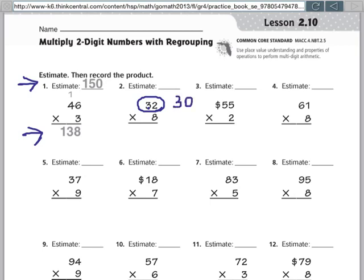So my estimate problem is going to be 30 times 8. When I do 30 times 8, I can just use my basic fact of 8 times 3 and then add my 0 to the answer. 8 times 3 is 24, and then add my 0. So my estimate is going to be 240.